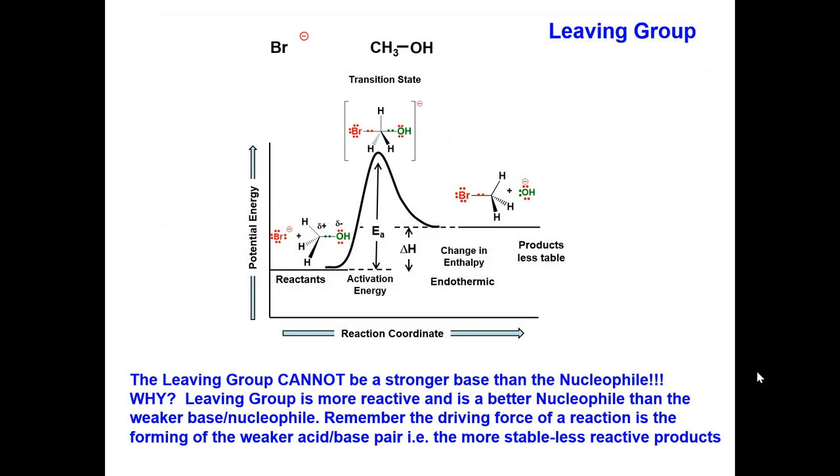The bromide ion may collide with the electrophile with the correct orientation. But in the transition state, the oxygen starts to gain a negative charge. The oxygen is less able to stabilize the negative charge than the bromide ion.